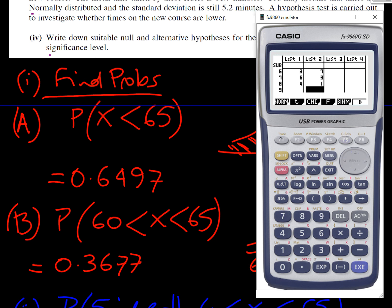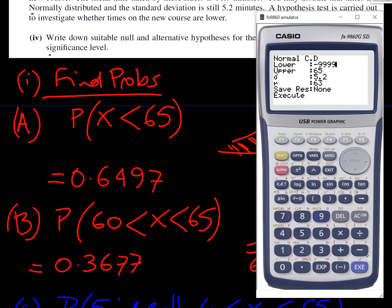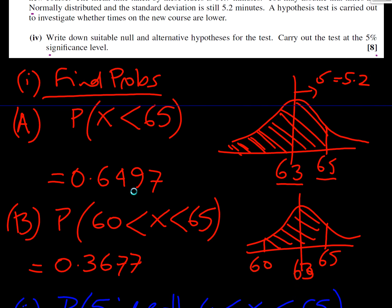We're in distribution, normal NCD, because that's what we're interested in. We're going from a very big negative number, so I'll put in minus infinity in effect, minus 99999. Our upper value 65. Our standard deviation is 5.2 and our mean is 63. Press the execute button. First row down, we get 0.6497. That's the first question, part A.